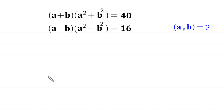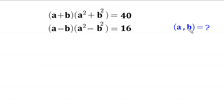Hello everyone, you are welcome. We will solve this very nice system of equations: (a + b)(a² + b²) = 40, and (a - b)(a² - b²) = 16. Our job is to find all possible values of a and b. Let's start by calling the first equation 'equation 1' and the second 'equation 2'.